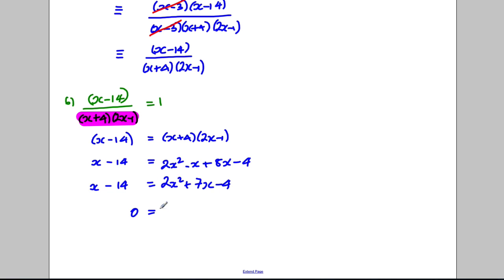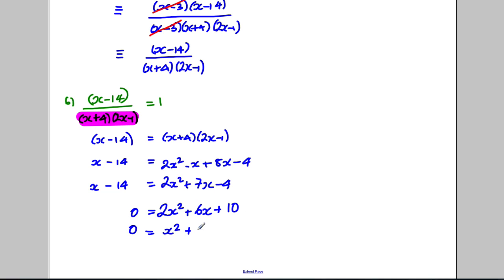Rearranging to make one side equal to zero — subtracting x and adding 14 to both sides: 0 = 2x² + 6x + 10. Dividing both sides by 2 since there's a common factor: 0 = x² + 3x + 5.